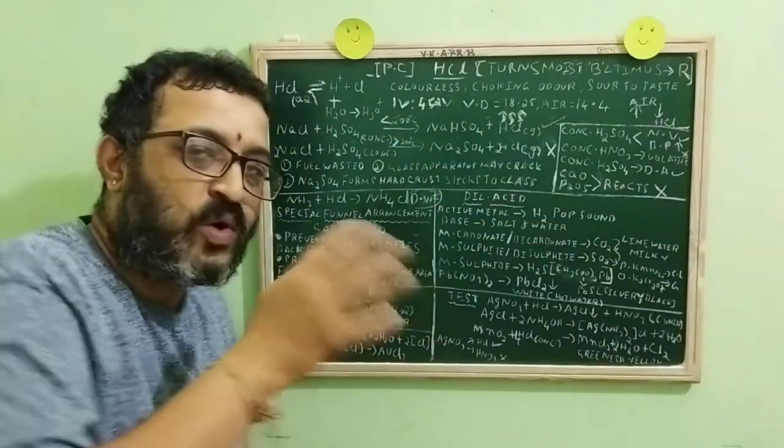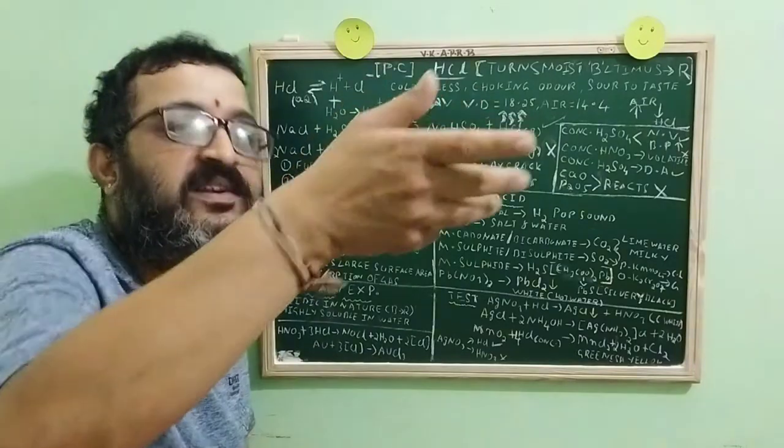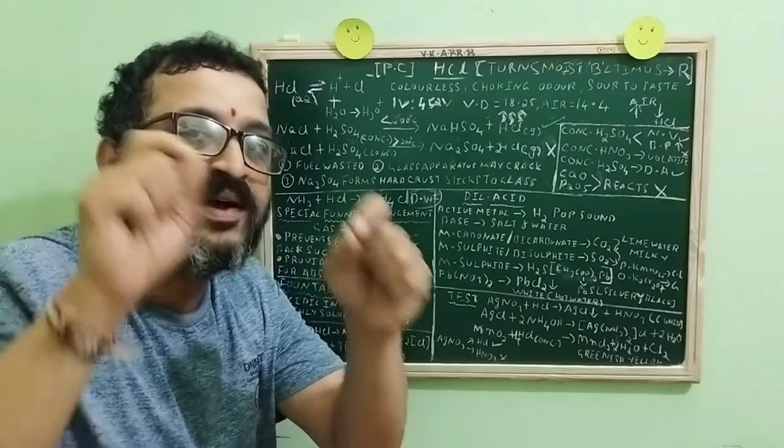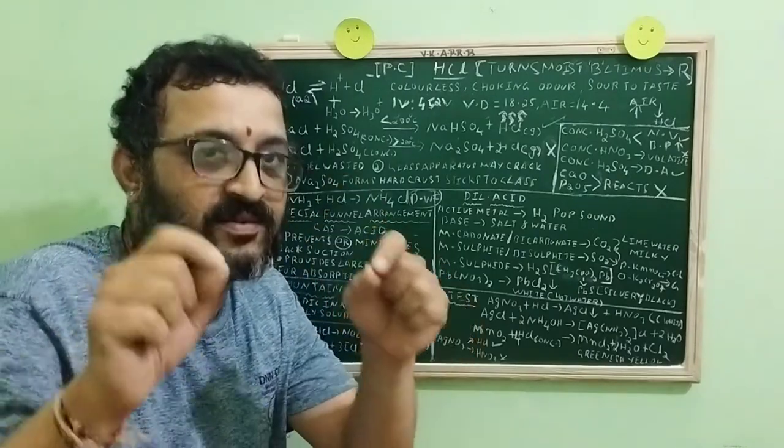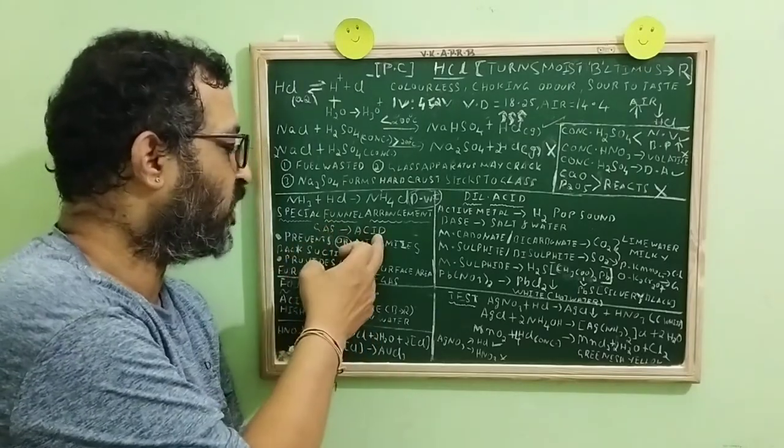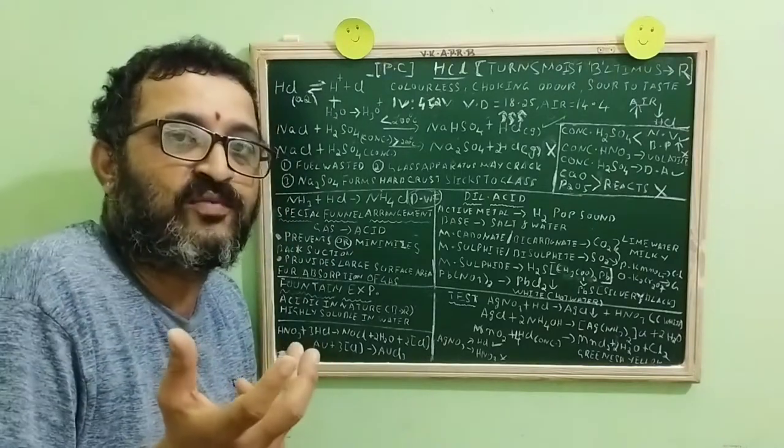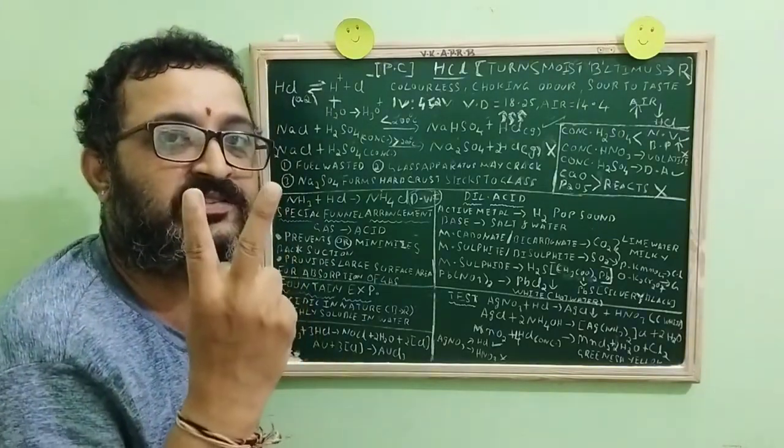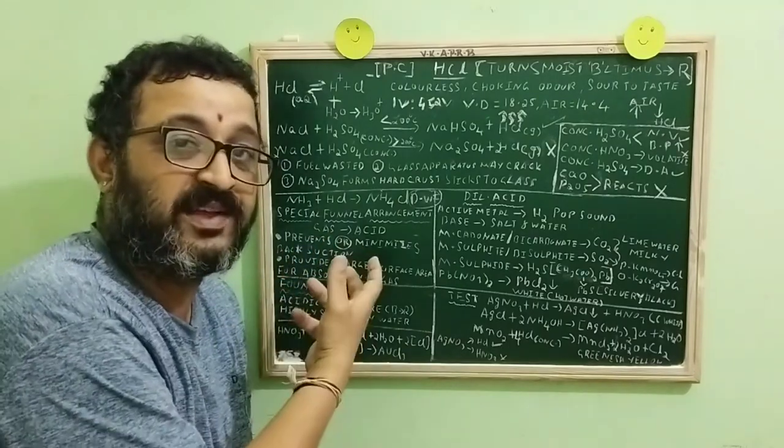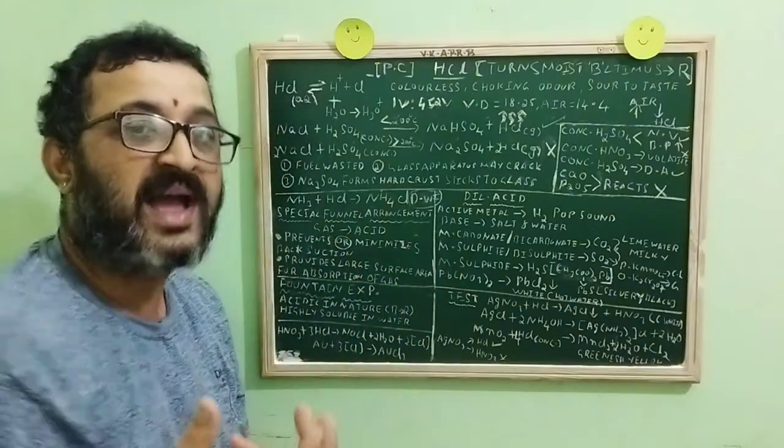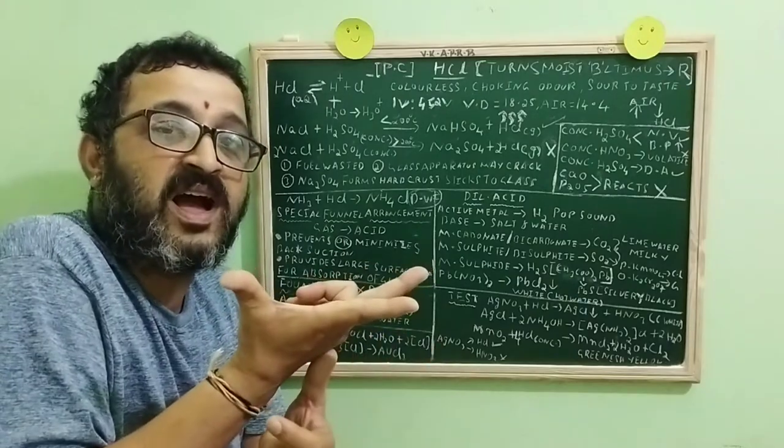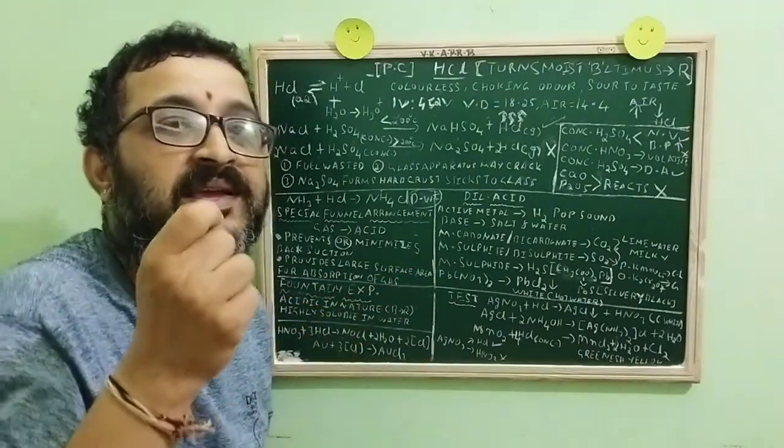Now, children, how do you convert this one? It's very simple. We dissolve the gas in water by using a special funnel arrangement. What is the use of special funnel arrangement? We can convert the gas to acid. What are the advantages of funnel arrangement? There are two advantages. This funnel arrangement prevents or minimizes back suction and it provides a large surface area for the absorption of gas.